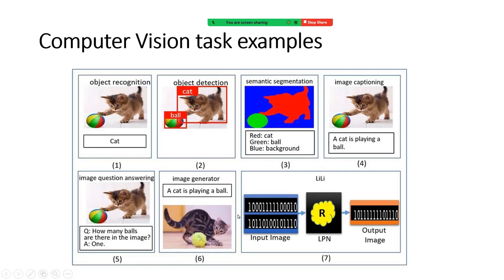You can also ask a query like 'How many balls are there in this image?' Similarly, you can tell the machine to create a visual object for you — that is the reverse operation. The model generates a picture from a description, like an artist's approach. This applies to fashion design and other creative applications.